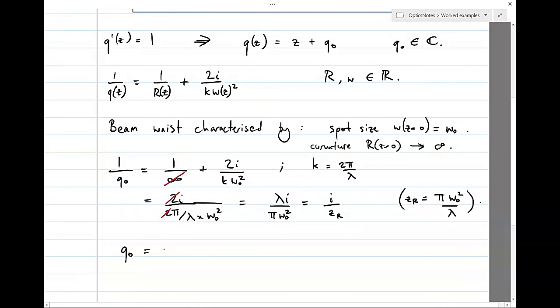It's equal to Zr divided by i, otherwise known as negative iZr. This means that we've got the entire solution for the complex radius of curvature. Q of Z equals to Z minus i Z of R.